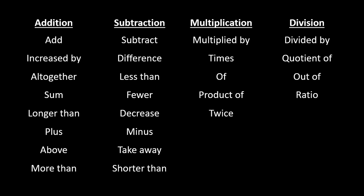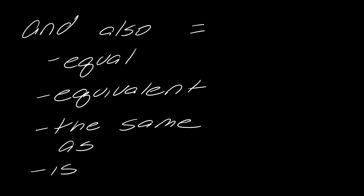There's one thing I want to add on to this: the equal sign. In the previous video, I didn't have the equal sign in there. Words that would indicate the equal sign would be something like 'equal' or 'equals,' 'equivalent,' 'the same as,' or 'is.' Those are all words indicating where the equal sign is. I actually think one of the key things with word problems is to figure out where does the equal sign naturally fall. If you can figure that out, you're going to make a really good step towards where you need to go.